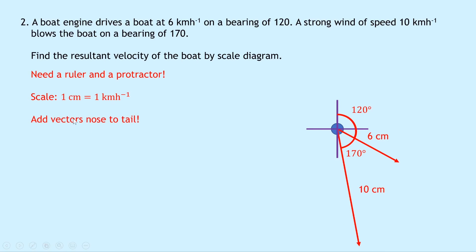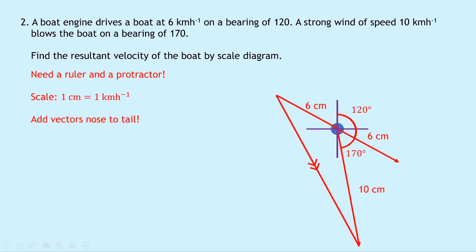Now we need to add our vectors nose to tail because right now they're not nose to tail. The easiest way to save space on your paper is to project the 6 centimetre line back the other way. So that's my 6 centimetre line, and we can now ignore the original one — we're dealing with the nose-to-tail vectors: this 6 centimetres and this 10 centimetres. We can now draw a resultant vector, which is the shortest distance from start to finish. Put the two arrows on to represent the resultant. Take your ruler and measure the distance along that resultant vector — you should get roughly 14.7 centimetres. Using our scale, 14.7 centimetres equals 14.7 kilometres per hour. So the magnitude of our velocity is 14.7 kilometres per hour.